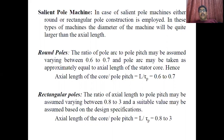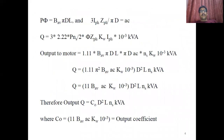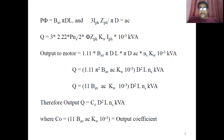As discussed in our previous video, in case of a synchronous machine the output equation is: Q = C₀·D²·L·ns, where C₀ = 11·Bav·ac·kw × 10⁻³. Here Bav and ac are the specific magnetic loading and specific electrical loading, and kw is the winding factor with a value of 0.955. By changing the values of specific magnetic loading and specific electrical loading, you can change the output of the synchronous machine.